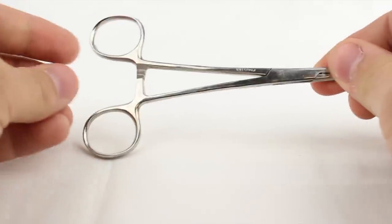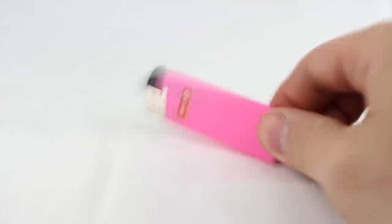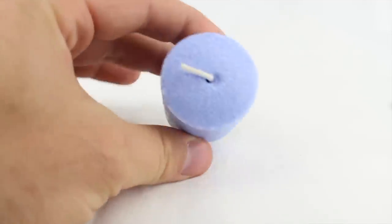Some type of pliers or forceps. The rare and elusive pink lighter from Circle K. And a candle.